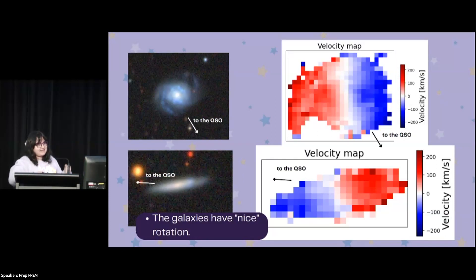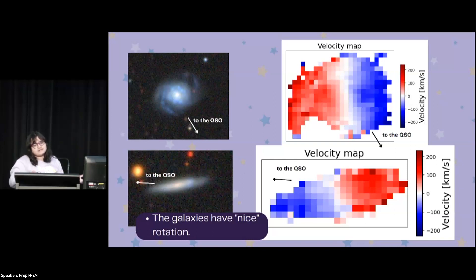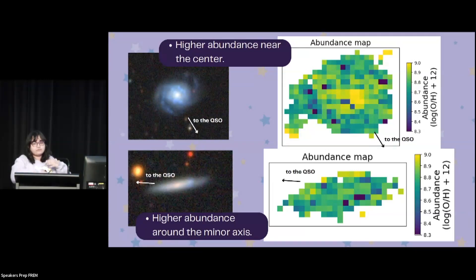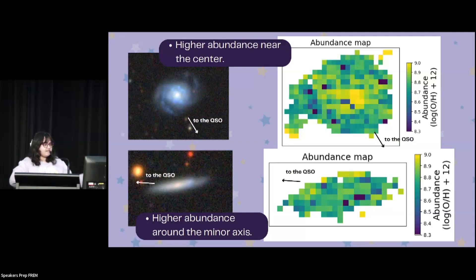I made velocity maps of all of my galaxies. Here are the velocity maps of the non-interacting pair, and we can see that they look really nice — this is an indication that the galaxies are actually non-interacting, as they should. I also made abundance maps of my galaxies. In the case of the face-on galaxy, there is higher abundance near the center, which is completely expected. And in the case of the edge-on galaxy, the abundance is slightly higher around the minor axis, which again is something we would expect.